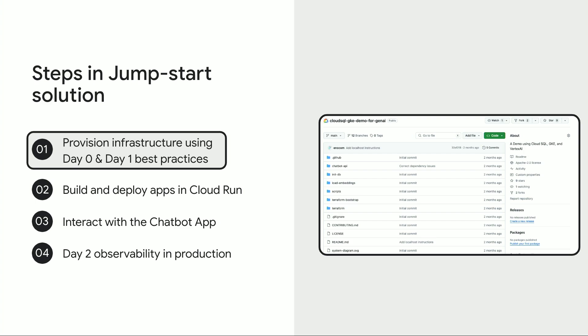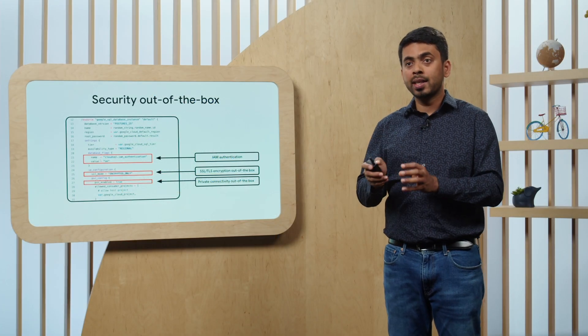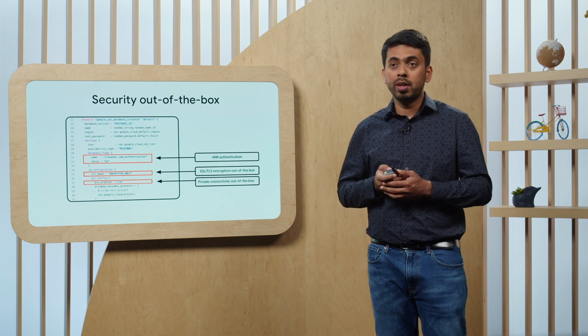The first step is to provision the infrastructure. When provisioning infrastructure for a Generative AI application, you want to make sure it follows all security and other best practices. For example, in this jumpstart solution, SSL/TLS encryption is enabled by default — all communication between client and server is encrypted. You also get IAM authentication setup, so you don't have to maintain separate usernames and passwords for the database. Private connectivity is also enabled by default, making all client-server communication private and secure.